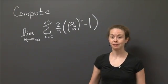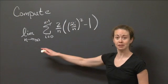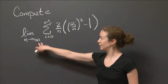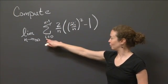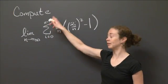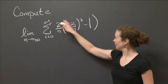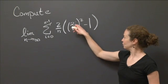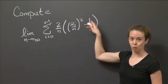Welcome back to recitation. In this video, I want us to compute the following limit. The limit as n goes to infinity of the sum for i equals 0 to n minus 1 of 2 over n times the quantity (2i over n) squared minus 1.